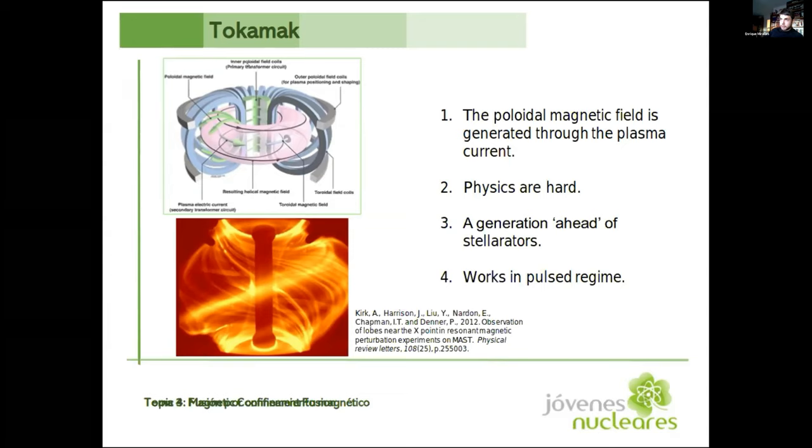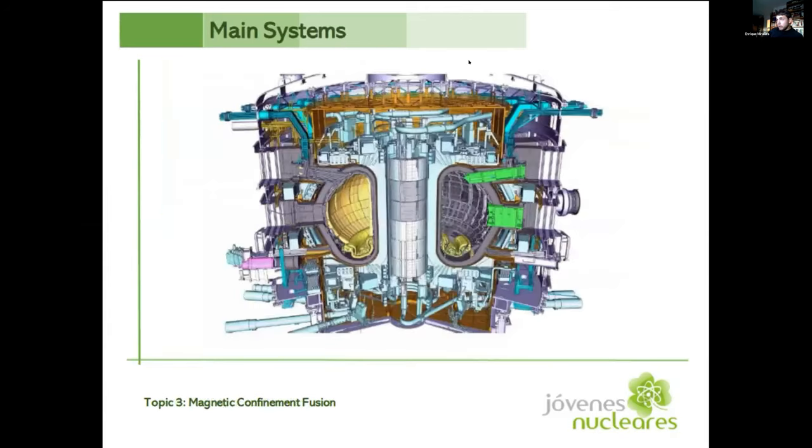To make the poloidal field in tokamaks, we need to ramp up a current through the central solenoid, and we cannot ramp it indefinitely. We have to stop at some point, so that's why tokamaks work in a pulsed regime. But it's much easier to build a tokamak than a stellarator, and the problem is that physics are harder for tokamaks. We say that tokamaks are a generation ahead of the stellarators because we have built many more tokamaks than stellarators, so we know more about tokamak construction. And this is MAST in the UK.